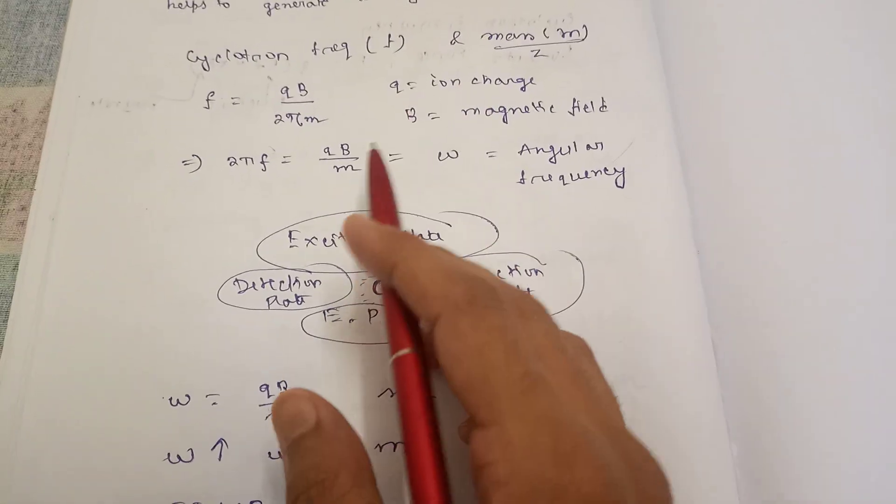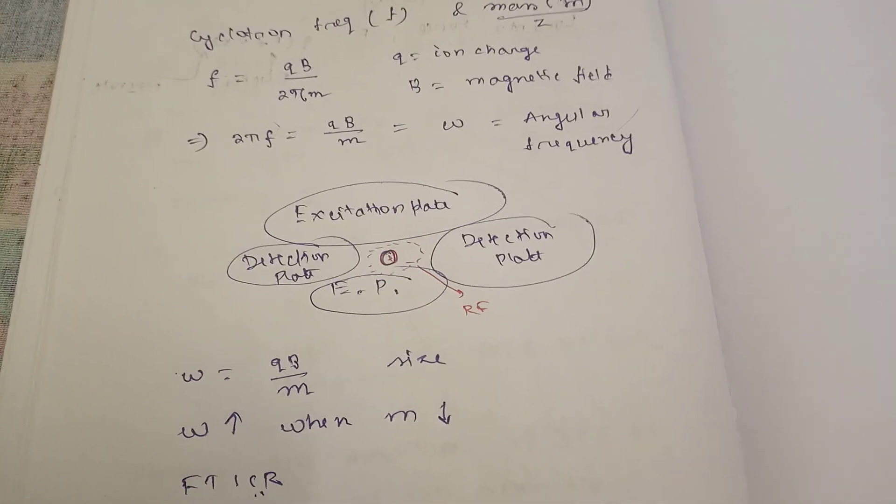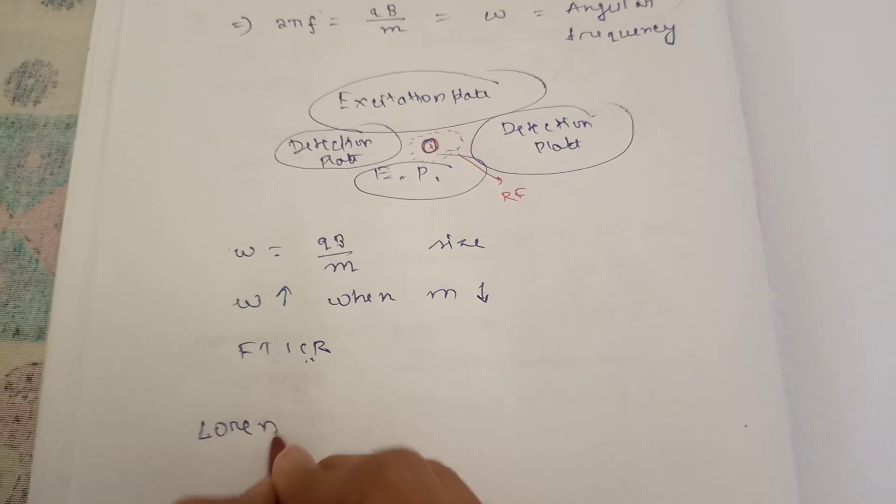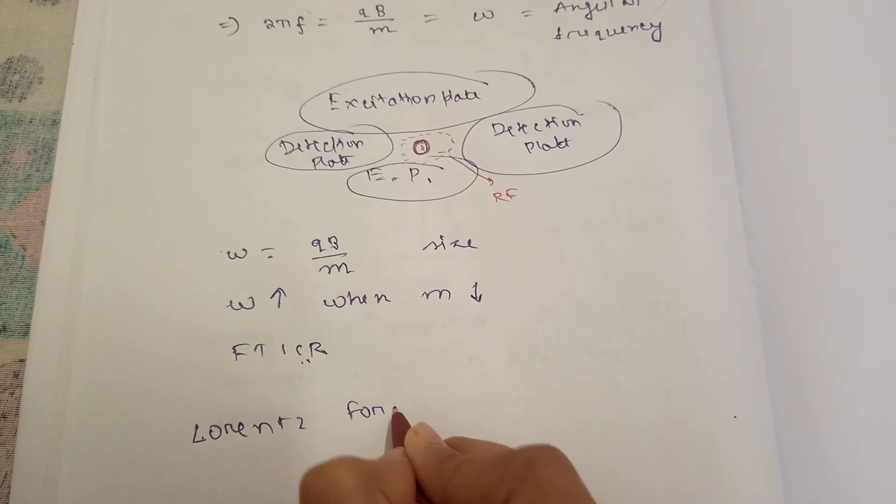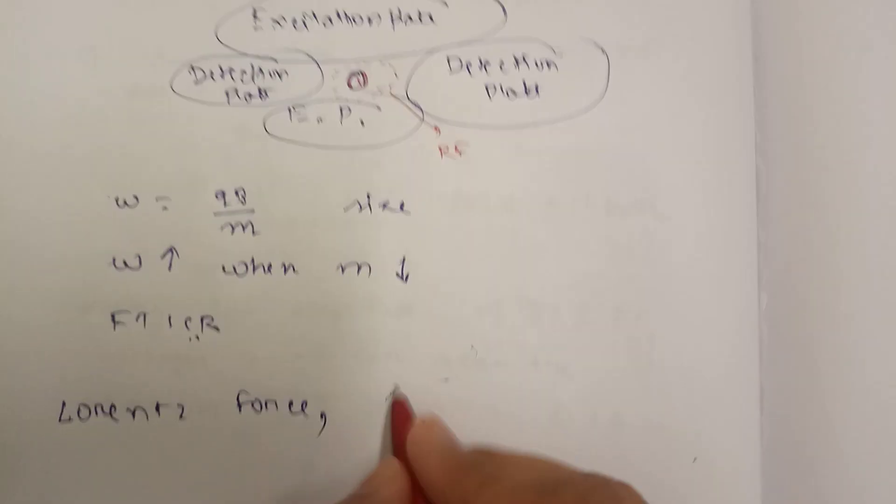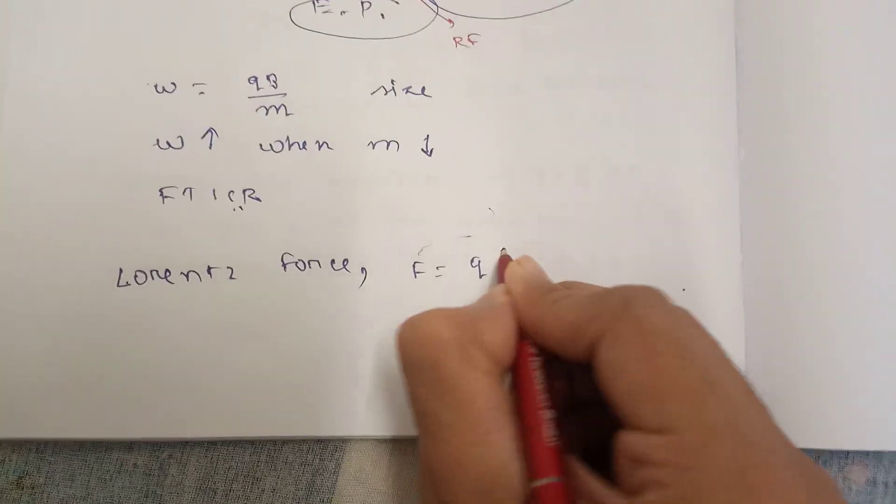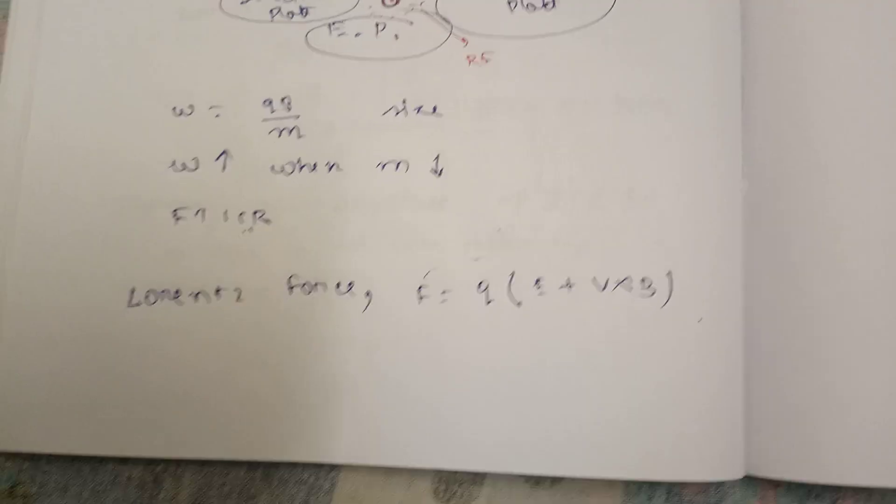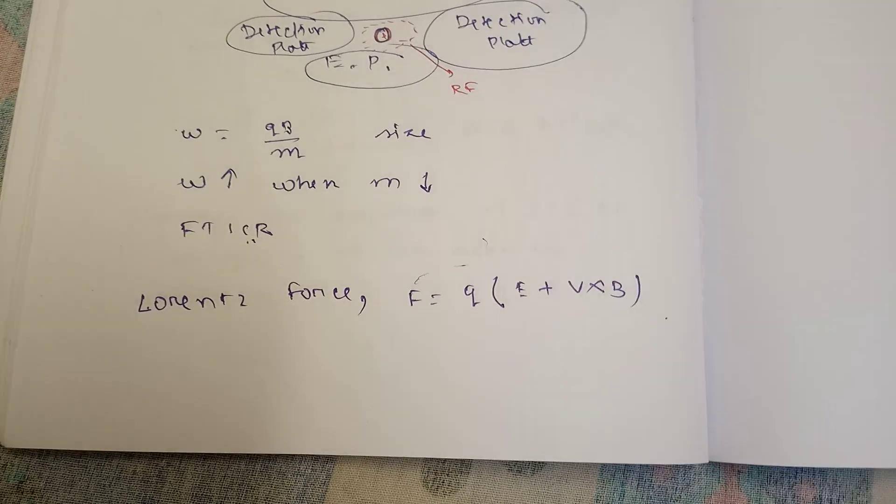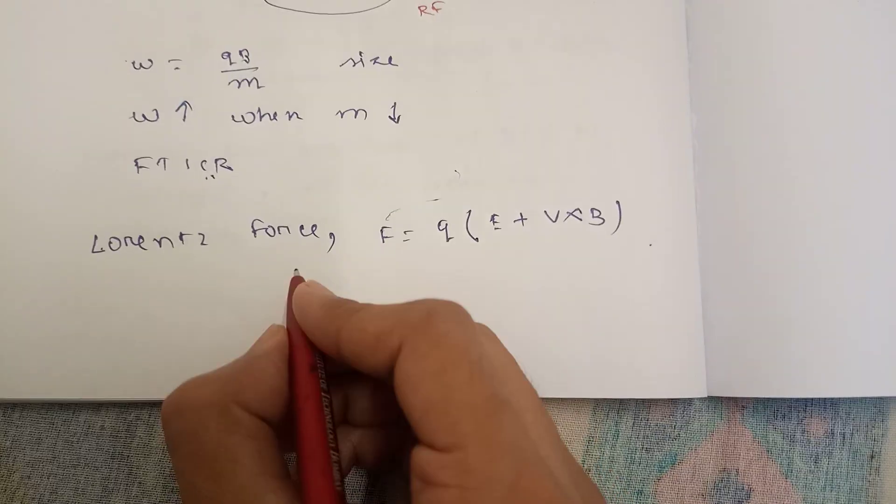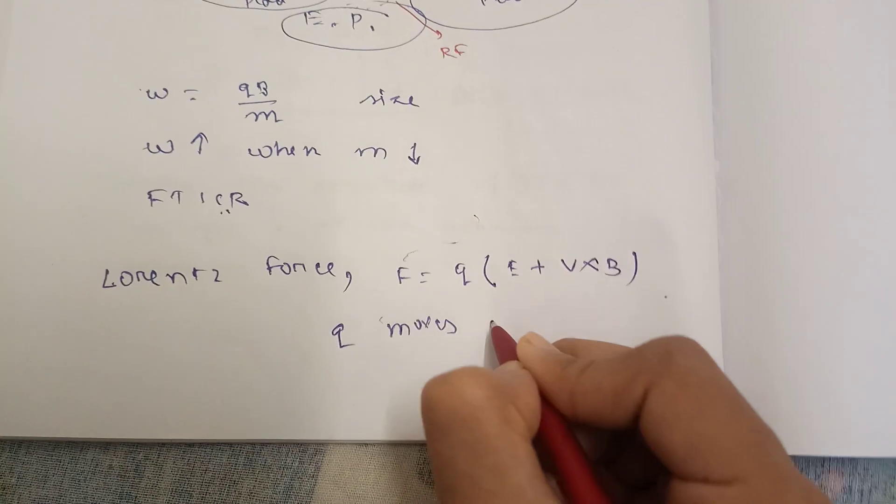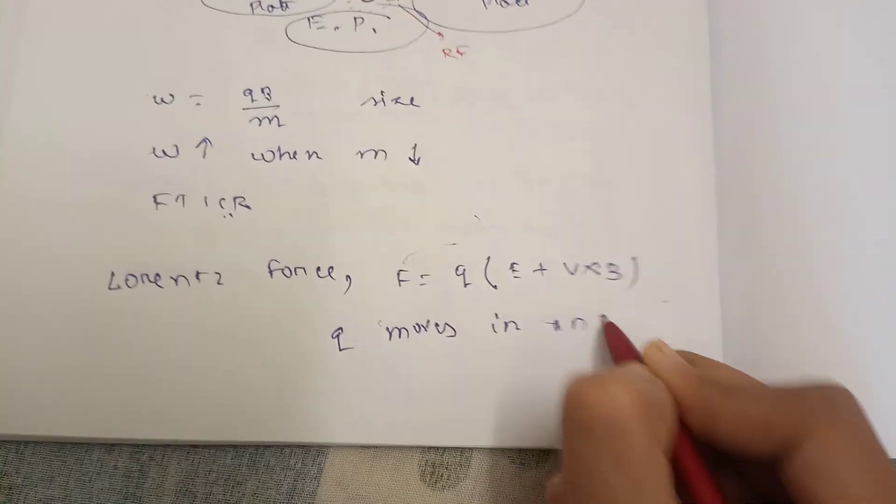Now one thing you will think: from where are these equations coming? There is one force called Lorentz force equation. It says F = q(E + v × B). Lorentz force describes a particle of charge q moving in an electromagnetic field.